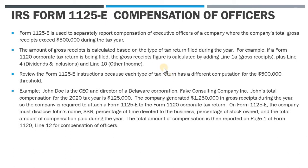It's important to read the instructions depending on what type of return you're filing to make sure you're calculating that number correctly. In our example, John Doe is a CEO and director of a Delaware corporation — Fake Consulting Company Inc. John's total compensation for the year is $125,000. The company did $1.25 million in gross receipts, so the company is required to attach Form 1125-E to its corporate tax return.